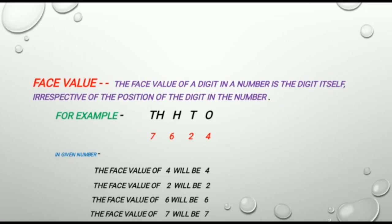The face value of 4 will be 4. The face value of 2 will be 2. The face value of 6 will be 6. And the face value of 7 will be 7. As we know, the face value never changes according to the places.